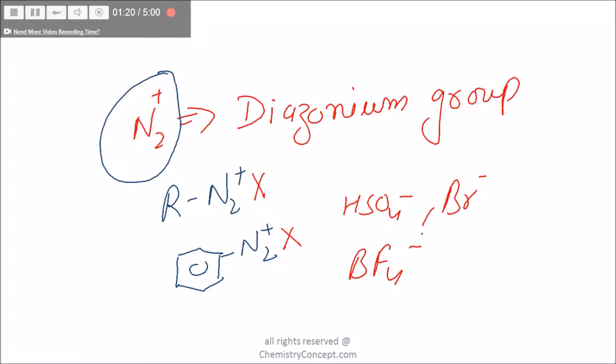If it is CH3 into Cl, its name would be methyl diazonium chloride. We add the name diazonium at the end of the main group to which it is attached.